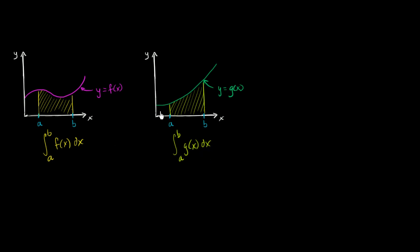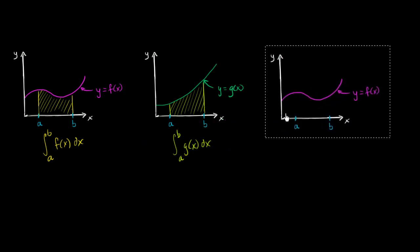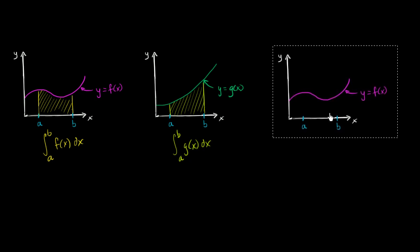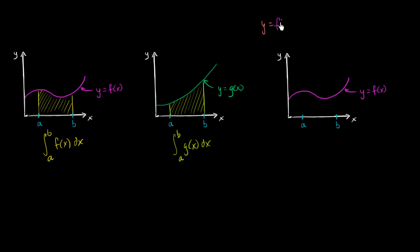Given these two things, let's think about the area under the curve of the function created by the sum of these two functions. This is the graph of y equals f of x, but what I want to do is approximate the graph of y equals f of x plus g of x. For any given x, it's going to be f of x, and I'm going to add g of x to it.